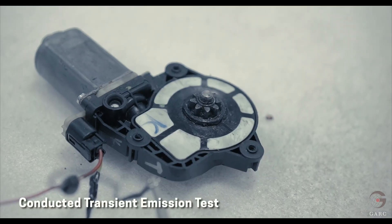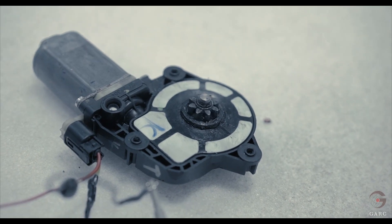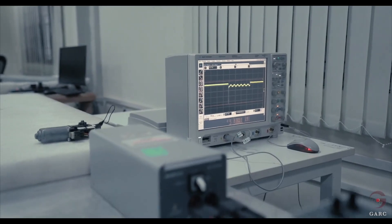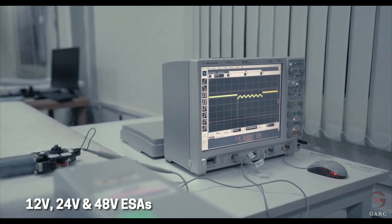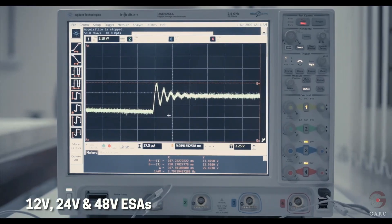The conducted transient emission test can measure emissions of power and supply lines up to 100 ampere for 12 volt, 24 volt, and 48 volt systems.